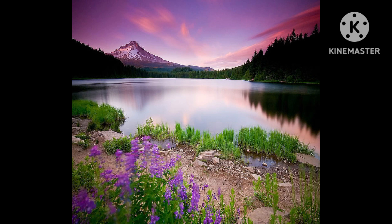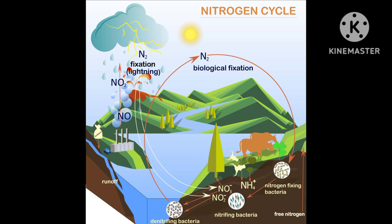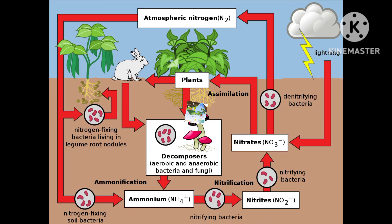The nitrogen cycle is a biogeochemical process through which nitrogen is converted into many forms, passing from the atmosphere to the soil, to organisms, and back into the atmosphere. The process of the nitrogen cycle consists of some important steps: nitrogen fixation, nitrification, assimilation, ammonification, and denitrification. These processes take place in several stages.